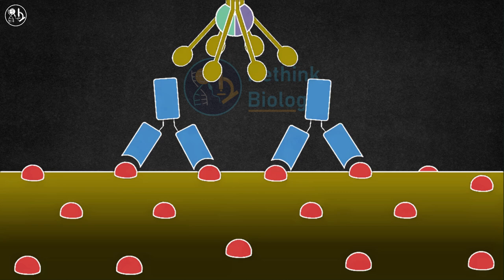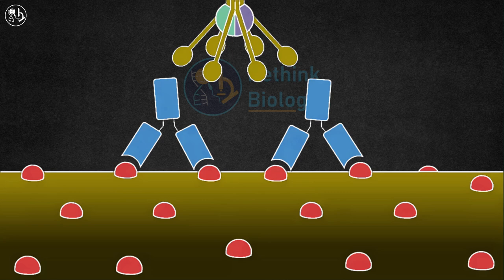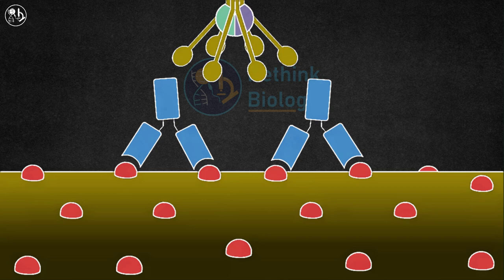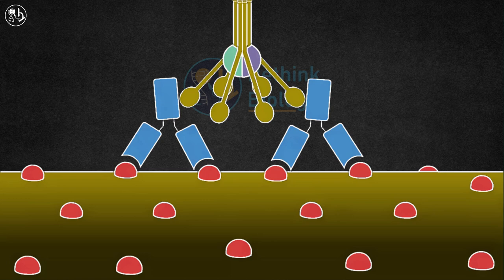One molecule of C1Q, two molecules of C1R, and two molecules of C1S attach to the bacterium's surface antibody molecules that have aggregated. When the C1 binds to antibodies, the C1R and C1S proteases are activated by cross proteolysis.